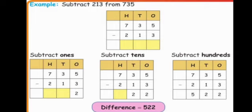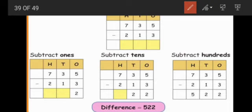Subtraction means we subtract two numbers and get the difference of those numbers. So the answer we call difference. Next, it decreases the numbers. Now you see seven hundred and thirty five and two hundred and thirteen. We subtract two hundred and thirteen from seven hundred and thirty five. First we write the biggest number — seven hundred and thirty five is the biggest number. Then we write the smallest number: 213. This is the symbol of subtraction.